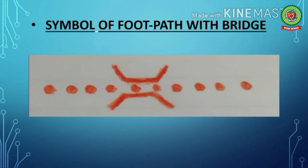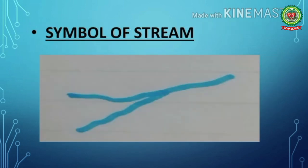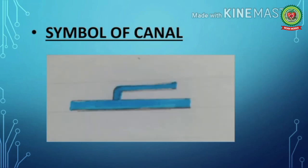Next is footpath with bridge — a temporary path made by man to cross a region — shown with a single line of dots in red color along with a symbol of bridge. Next we have the symbol for stream, shown in blue color. A stream means a small or narrow river.